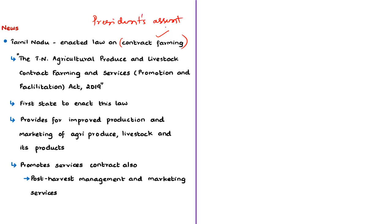The law is named the Tamil Nadu Agriculture Produce and Livestock Contract Farming and Services Promotion and Facilitation Act 2019. Tamil Nadu is the first state in the country to enact a law on contract farming. This act will provide for improved production and marketing of agriculture produce, livestock and its products through comprehensive contract farming.